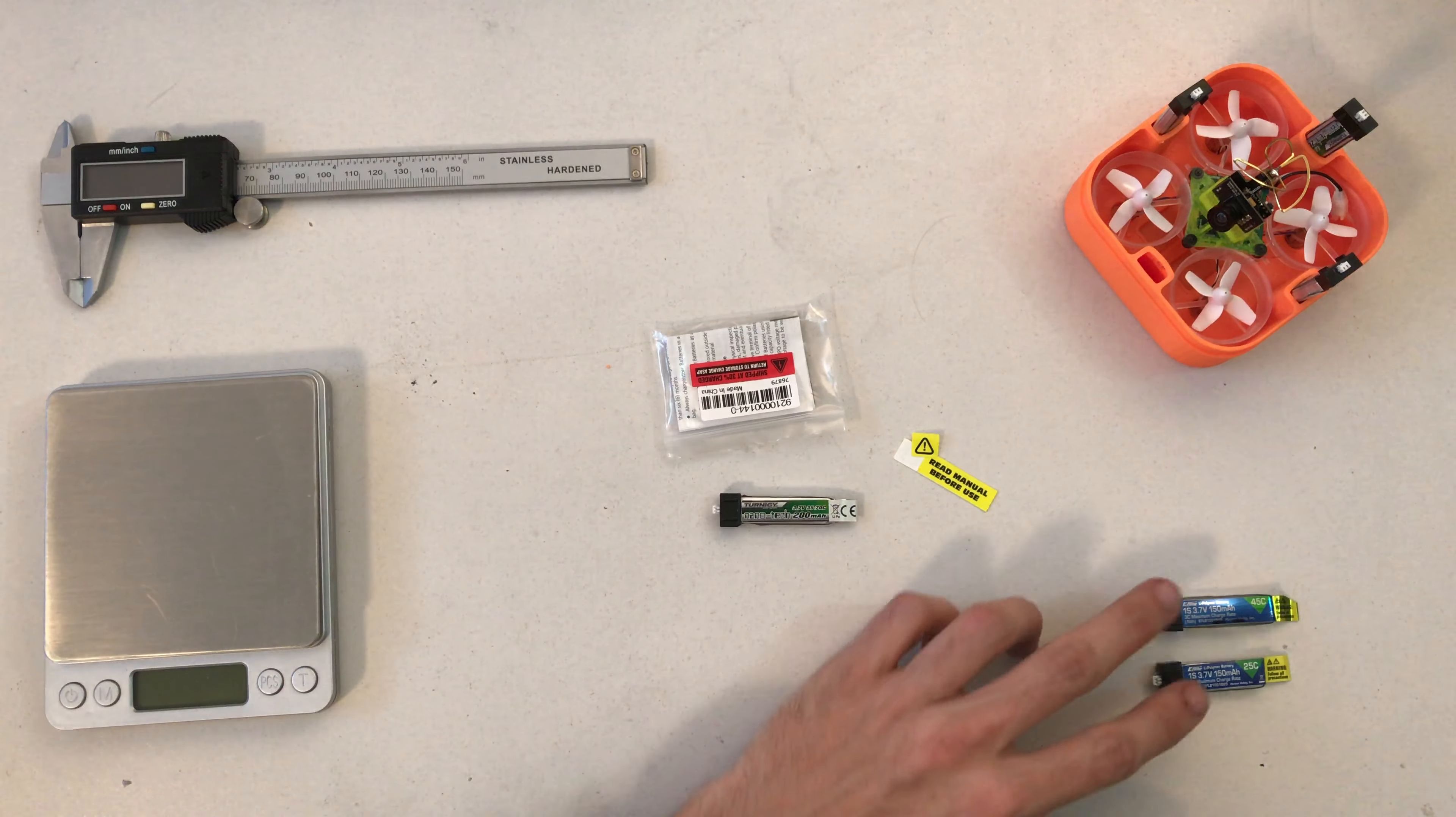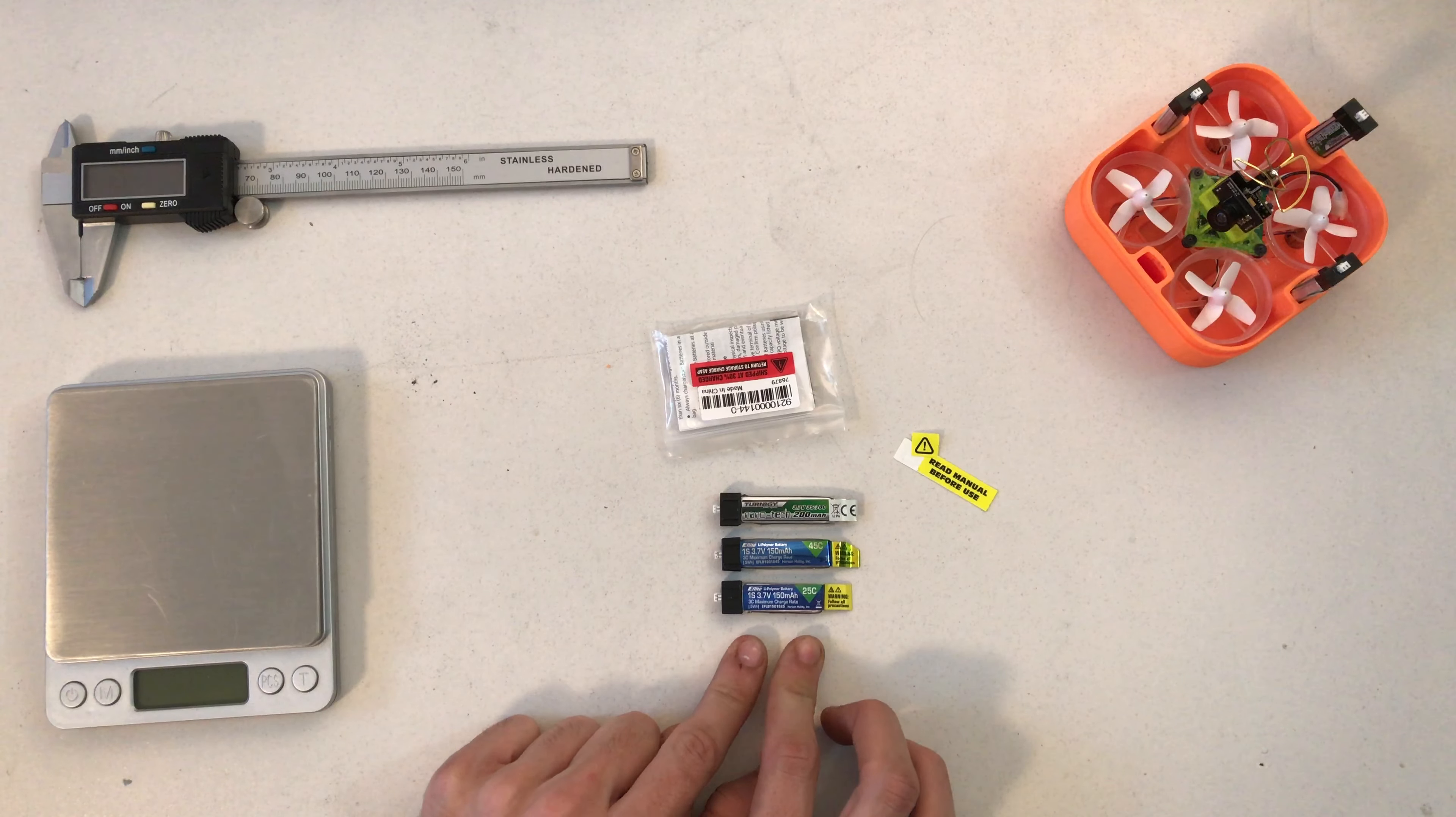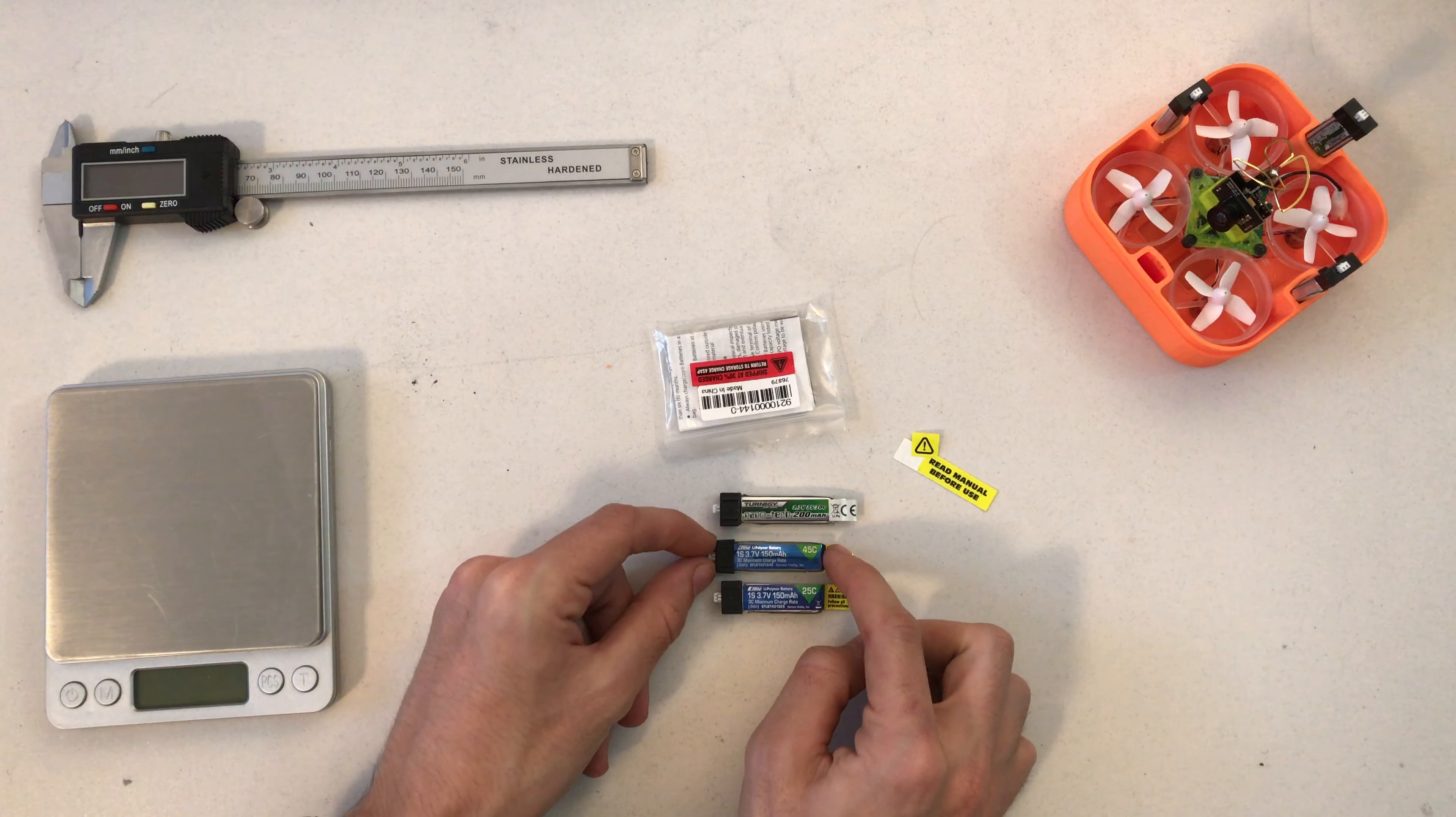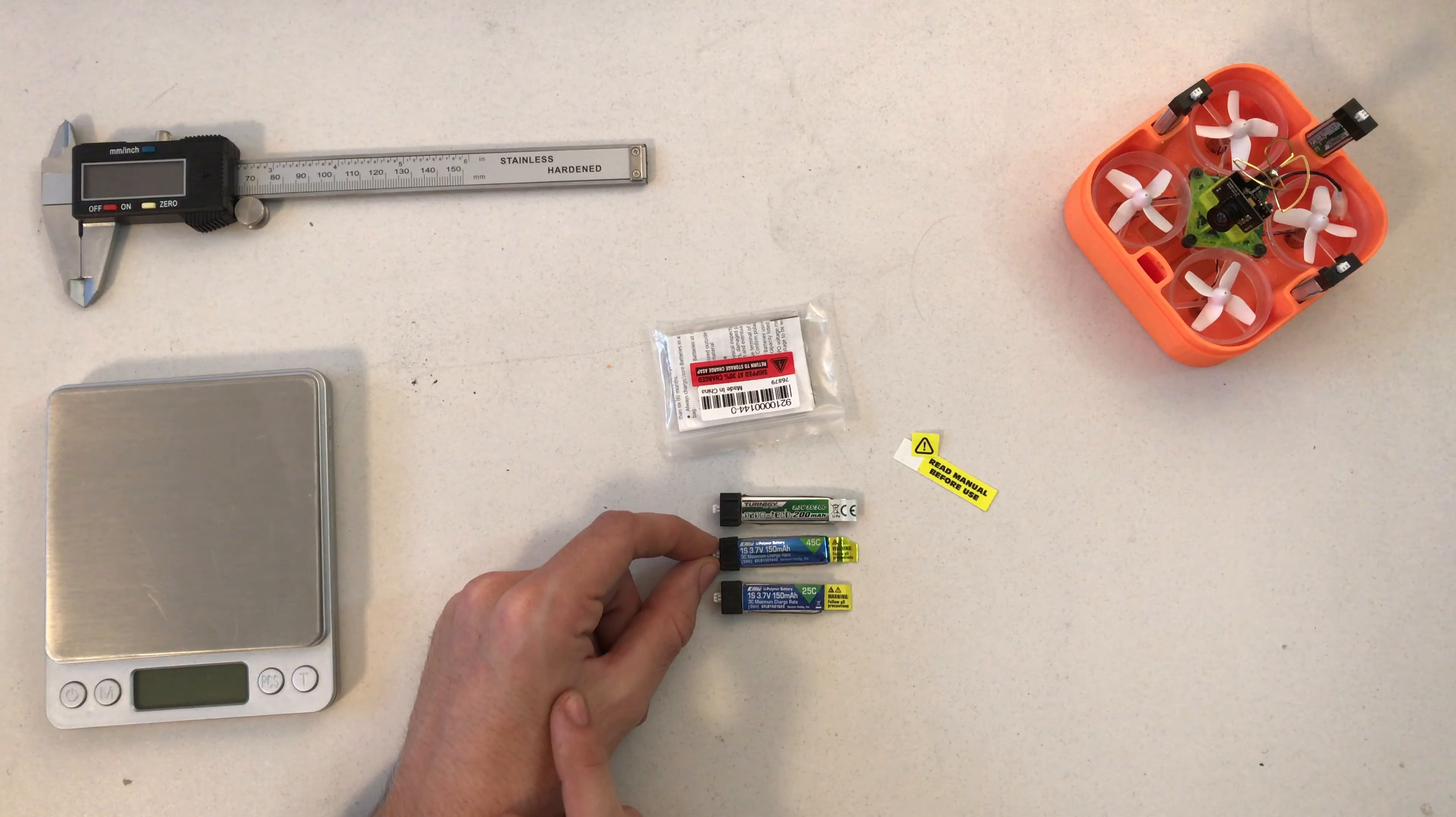Let's get started with the comparison to the older LiPos I was flying. The 25C one was the stock one I bought the Inductrix with. Then I upgraded to, again, Horizon Hobby, the 45C versions. They're both 150mAh.